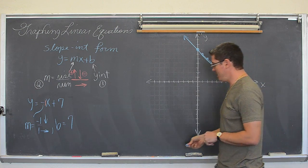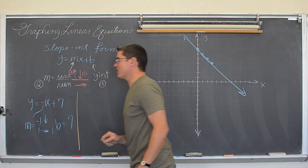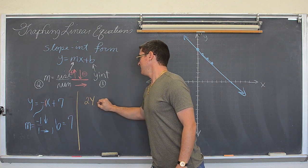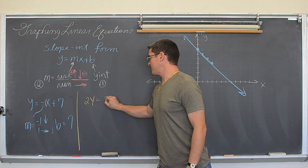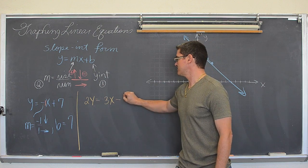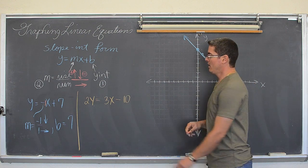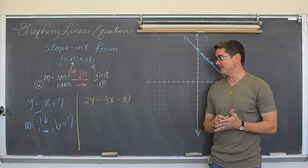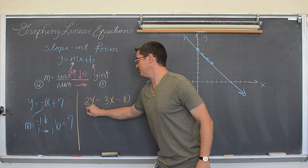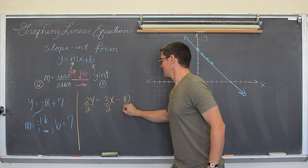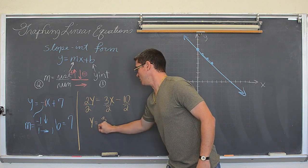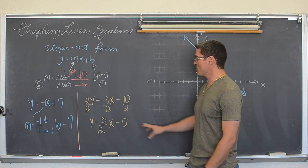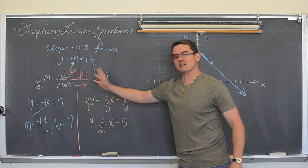Now what if the equation did not already have y by itself? Maybe it was two y is equal to three x minus ten. Well, this is close to having the y value by itself, but there is still a two there, so it is not completely isolated. So what you want to do is divide everything by two and get y is equal to three over two x. And negative ten divided by two is negative five. Now because I am running out of space, I am going to erase all this in a minute as I do the rest of my examples.